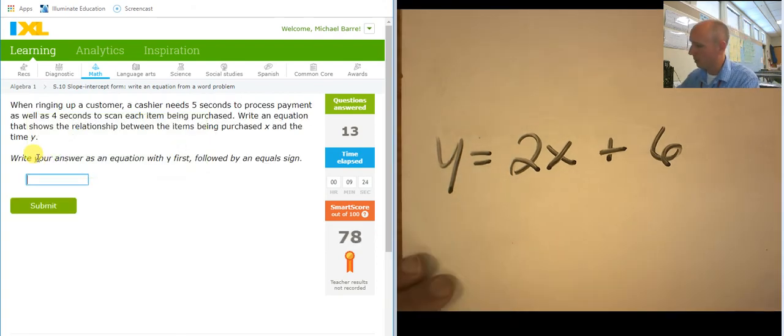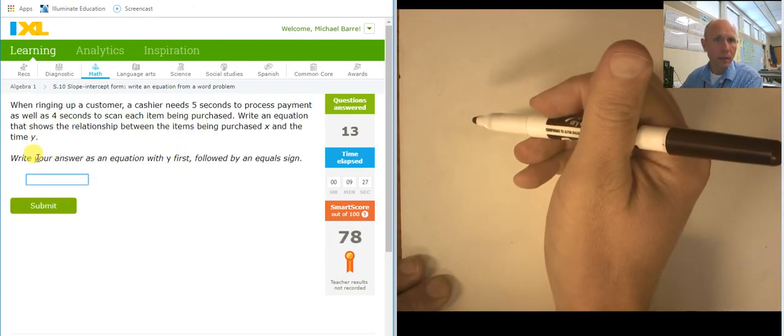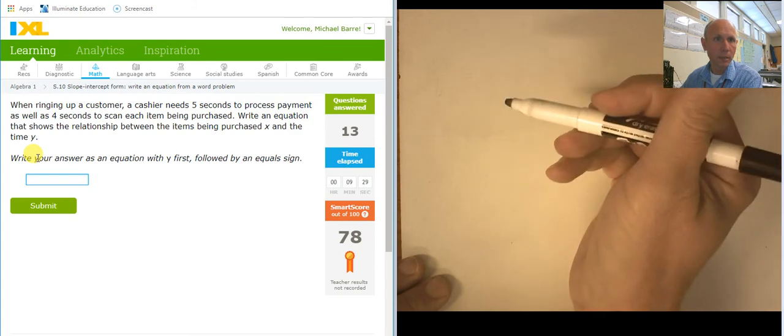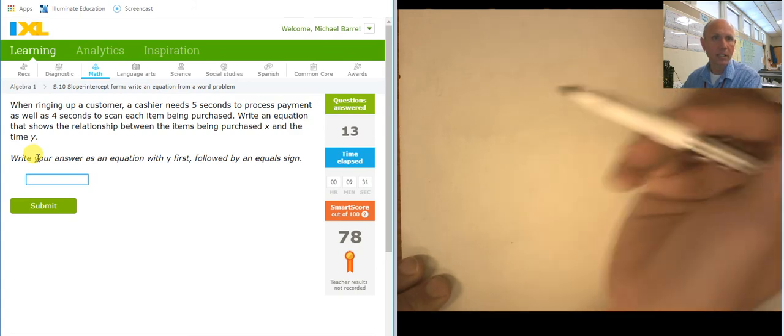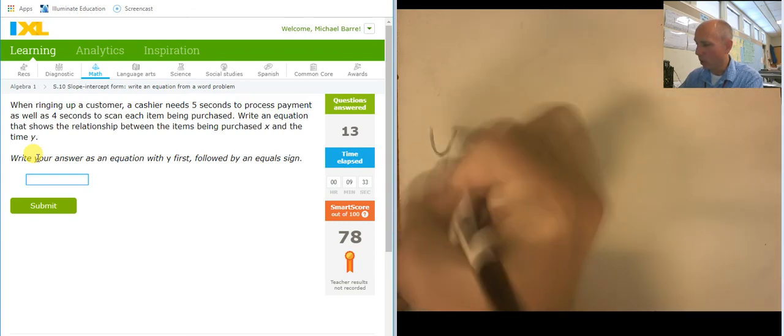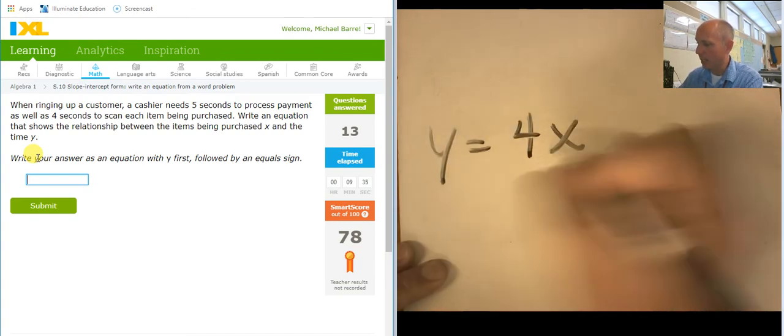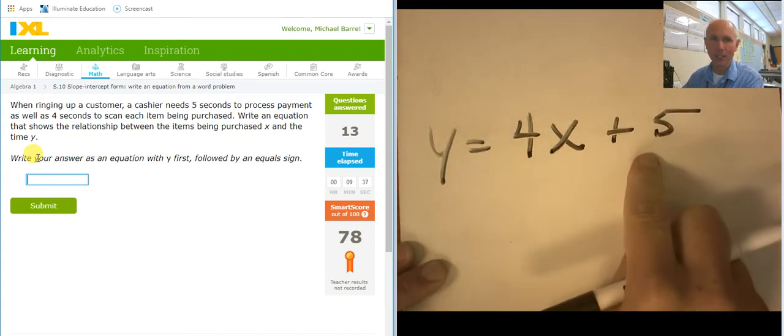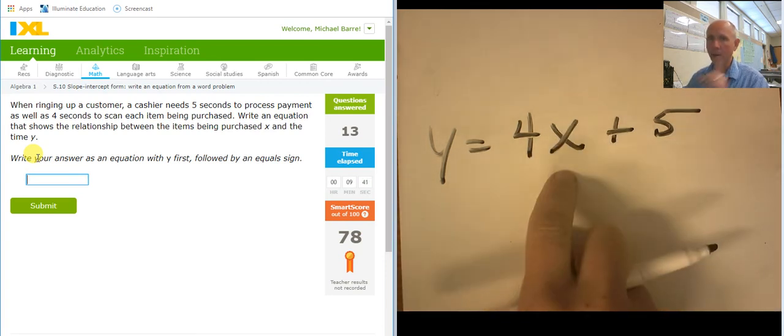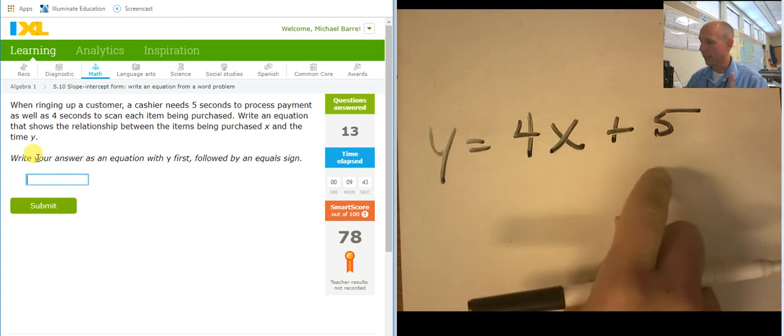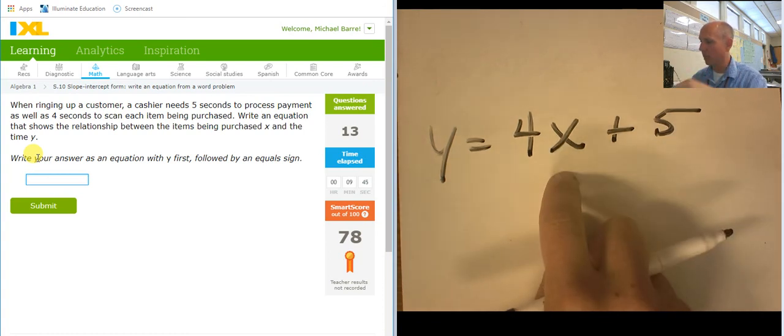Okay. I'm going to try to get to 80 and see if anything happens. Five seconds to process the payment as well as four seconds to scan each item. Okay. So, y equals four seconds per item plus five seconds just to take the money. So, if I buy one item, it's going to take nine seconds. If I buy two items, it's going to take 13 seconds.